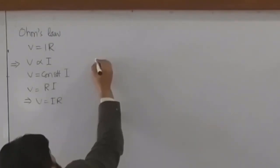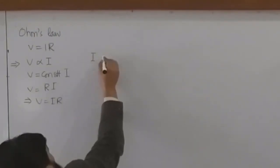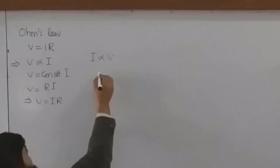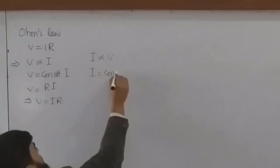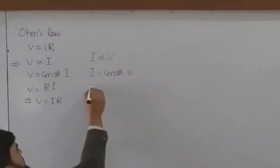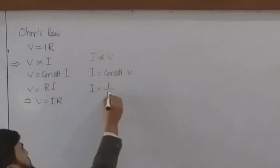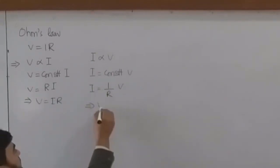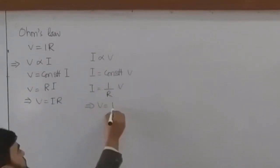Another way to do this is if I write that I is proportional to V, then I will be equal to a constant times V. And this constant I write is 1 over R. So this will again make the equation V equals IR.